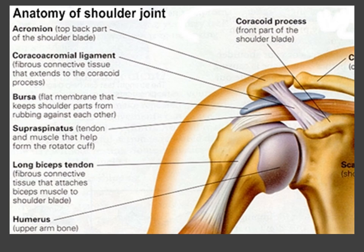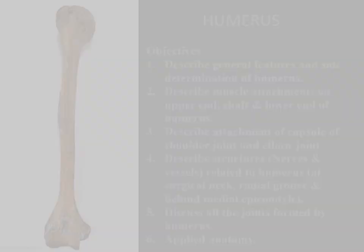Moving to the shoulder joint: it is the joint between the spherical head of the humerus and the glenoid fossa of the scapula, forming a ball-and-socket variety of synovial joint. It is a simple joint with multiaxial movements. You should know the different muscles causing movement at this joint, the ligaments including the fibrous capsule and glenohumeral ligaments, and the different bursae present in this joint to provide lubrication.